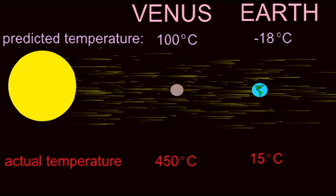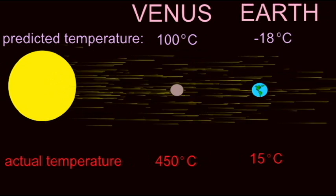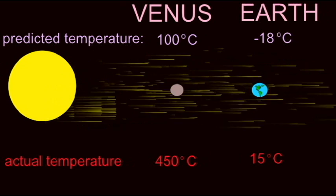Venus, whose atmosphere is 96% carbon dioxide, has an average temperature of 450 degrees Celsius.